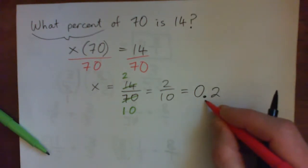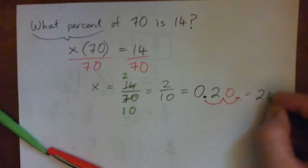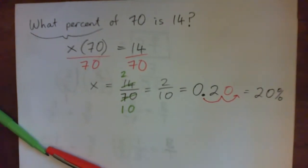Take this decimal point and move it two spots to the right, put a 0 in, and this becomes 20%. Or 20 per 100.